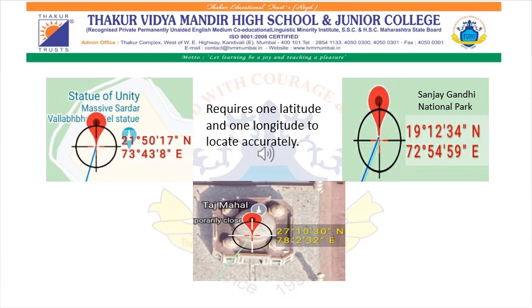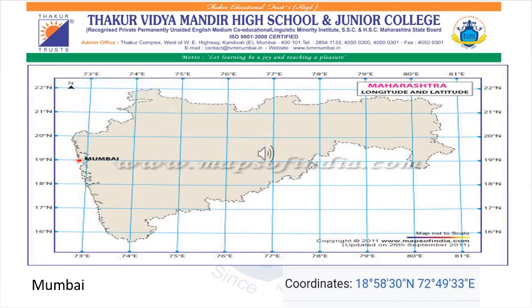So, in short, any place requires one latitude and at least one longitude to locate accurately on the globe. Where is Mumbai? Its coordinates are 18 degrees 58 minutes 30 seconds north latitude and 72 degrees 49 minutes 33 seconds east longitude.